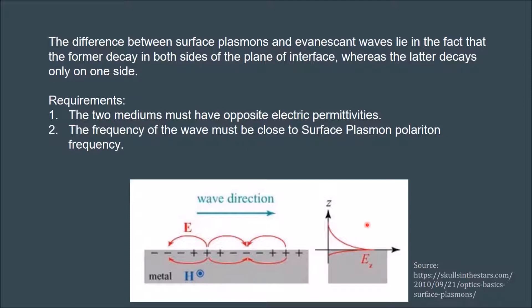For surface plasmons to exist, there are two requirements that are to be satisfied. First, the two mediums must have opposite electric permittivities. Second, the frequency of the wave must be close to surface plasmon polariton frequency. Broadly speaking, a surface plasmon is a traveling wave oscillation of electrons that can be excited in the surface of certain metals with the right material properties. It is also to be noted that surface plasmons only exist in the transverse magnetic mode.